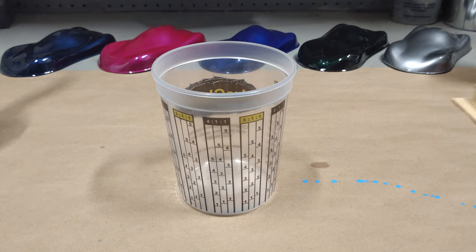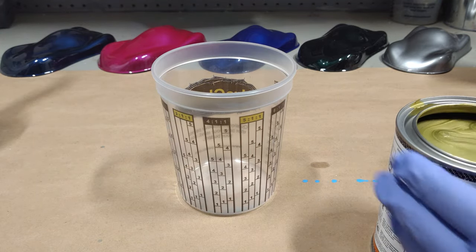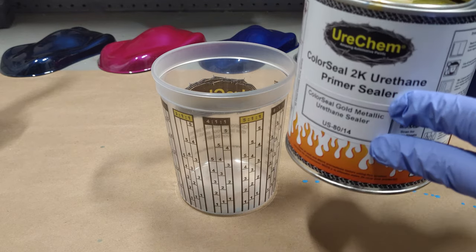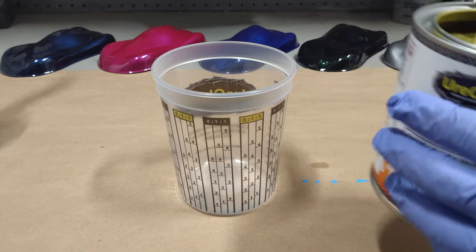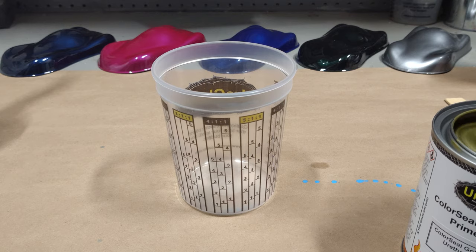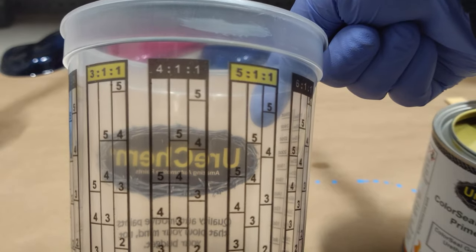Okay, let's move over to our US series color seal primer here. This product is going to mix four to one to one. So that's four parts primer, one part reducer, and one part activator. Again, we're going to work left to right, just like we're reading the book. We're going to use the four to one to one column.